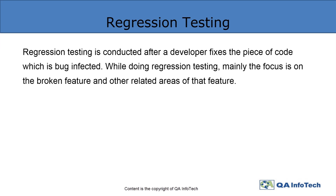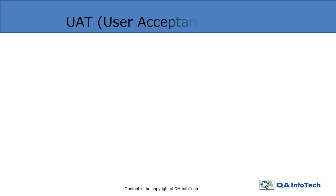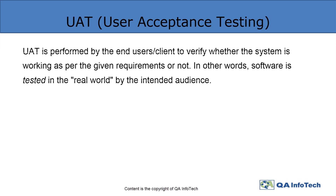Third, regression testing. Regression testing is conducted after a developer fixes a piece of code which is bug-infected. In this testing, we majorly test the bug-infected area in the application, along with the functionality of the features related to it.